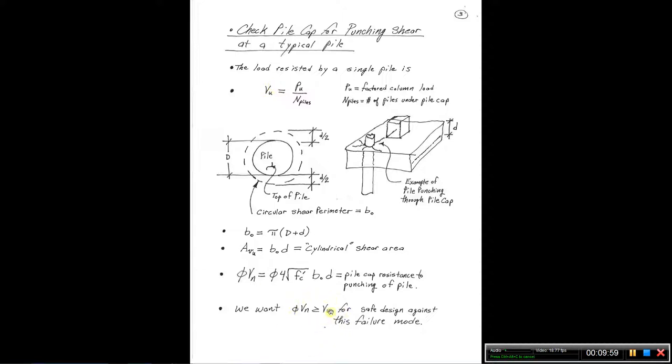If that relationship is satisfied, then we have a safe design against punching shear failure. One also has to be careful as far as how close this pile gets to the edge of the pile cap. Because if it gets too close, we're not going to have a complete circumference here for our failure surface. It might be just a half circle or maybe even a quarter circle if it's too close to the corner of the pile cap. Those are some other things that a person has to consider.